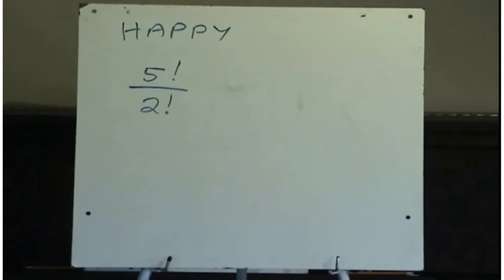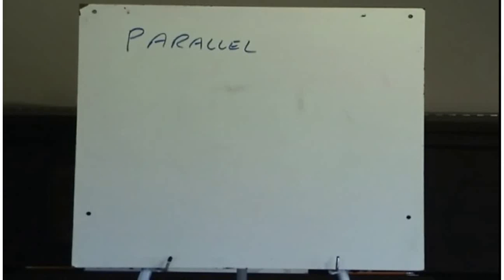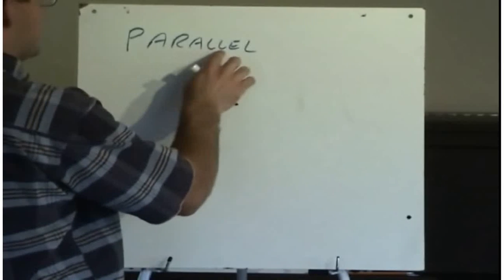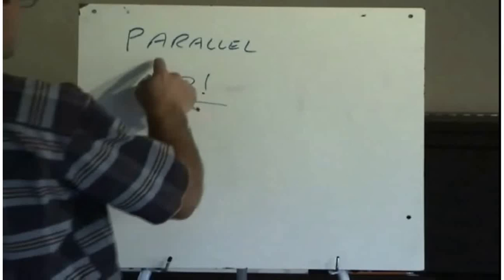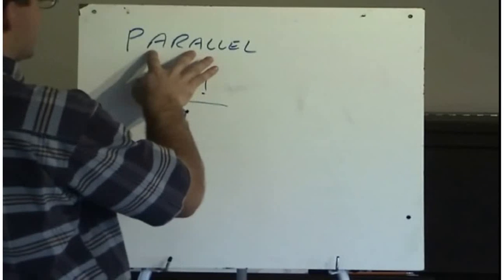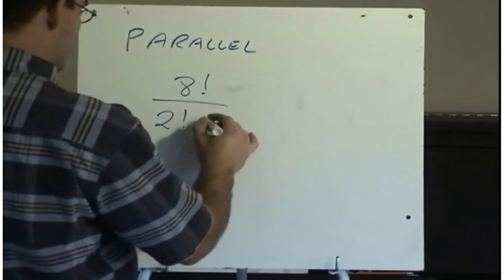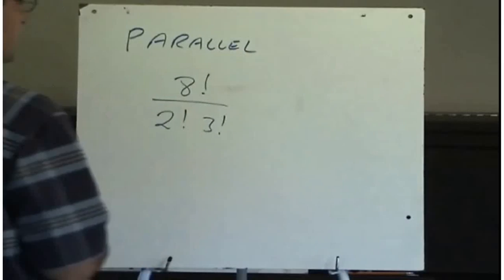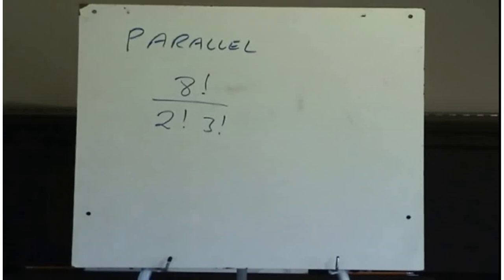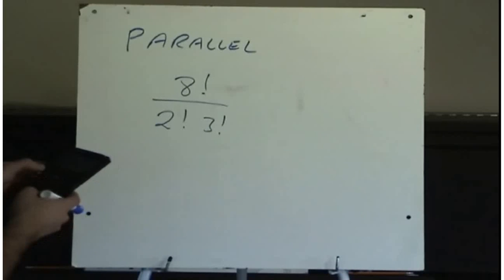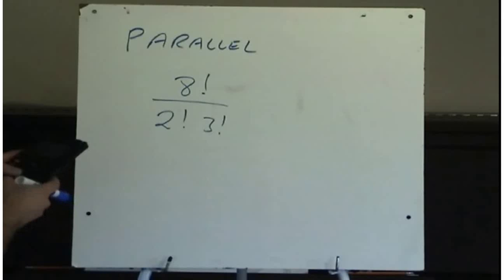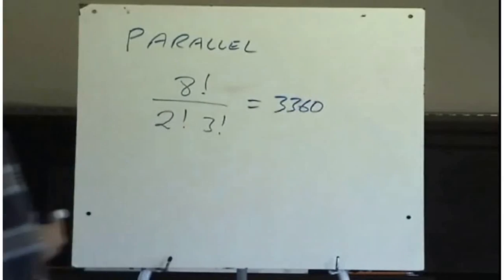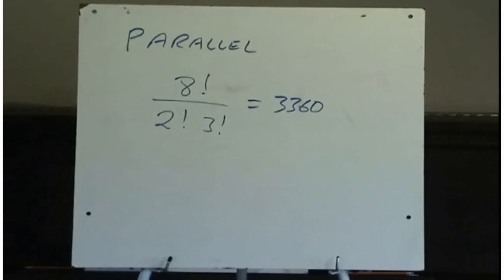Consider the word 'parallel'. It has eight letters. So the number of permutations of the word parallel would be eight factorial, except that it has two As — so we divide by two factorial — and three Ls — so we divide by three factorial — because moving those Ls around makes no difference. So eight factorial divided by the bracket two factorial times three factorial gives 3,360. There are 3,360 permutations of the word parallel.